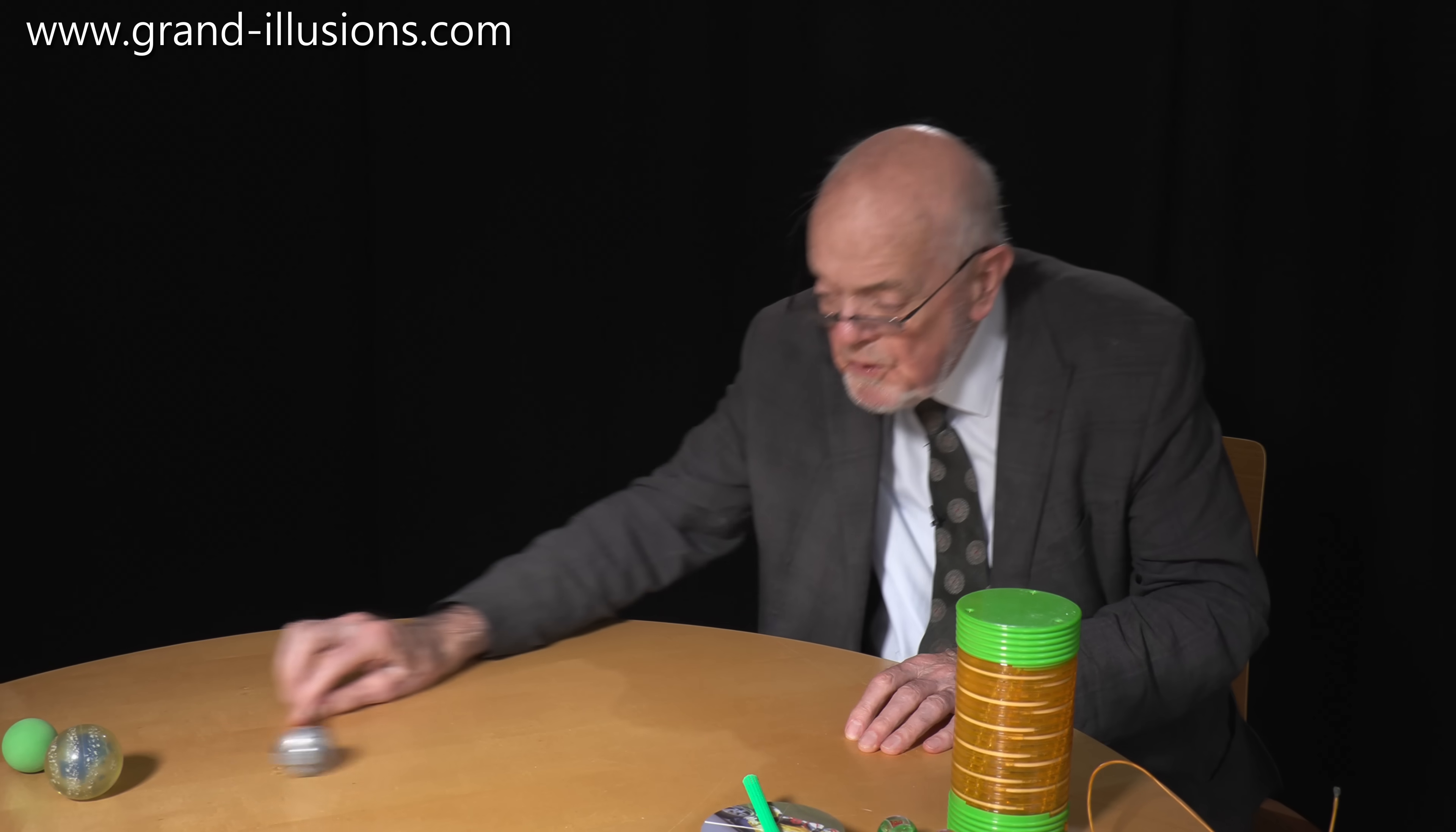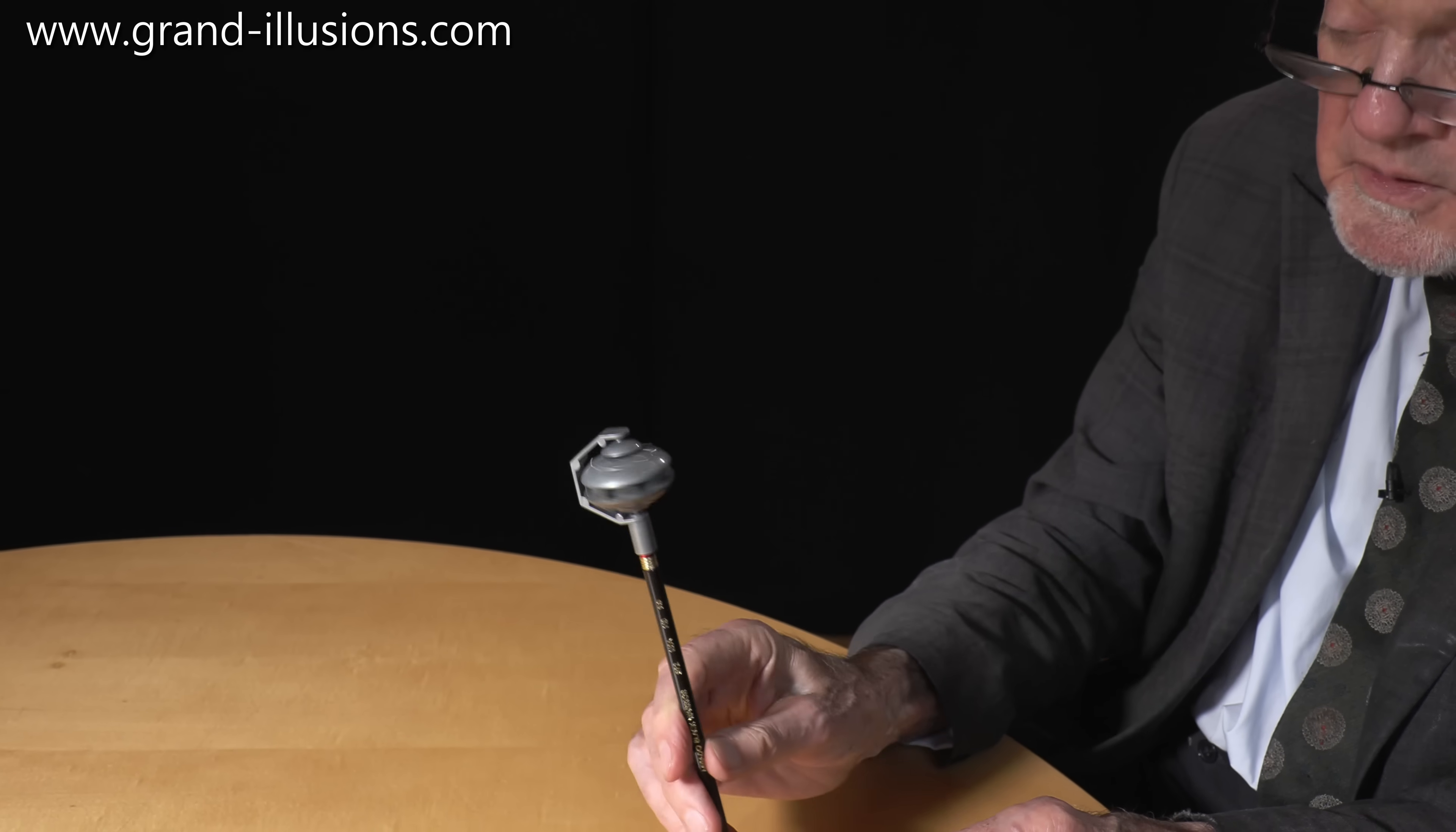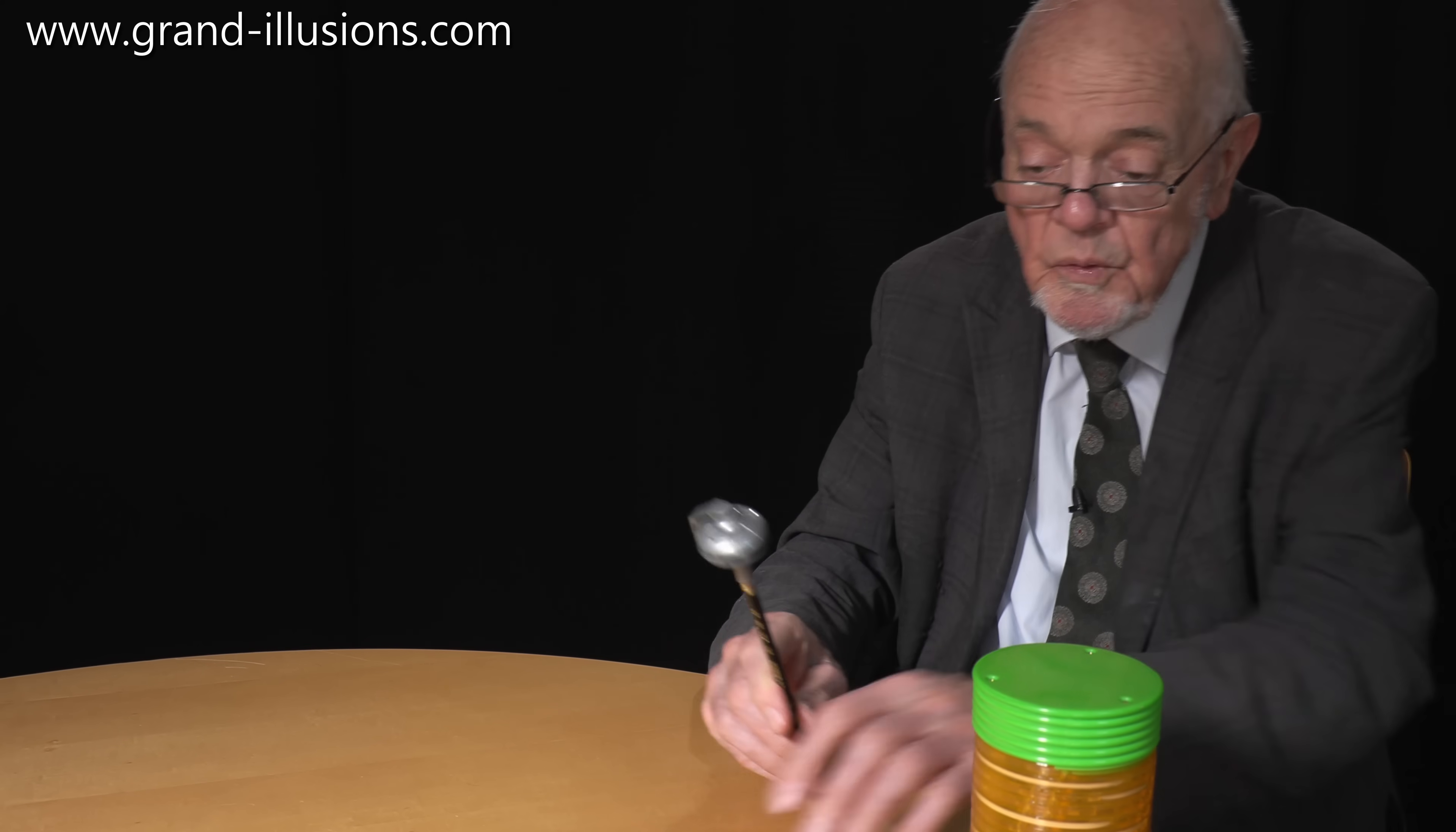This one is really cute. It's just a pencil, but with a rotating top looking like a satellite. It spins round and round and round. I can sort of make it work but not very well, but I just like the idea of something rotating at the top like that while you're scribbling your notes on a pad. It's a very cute little thing.